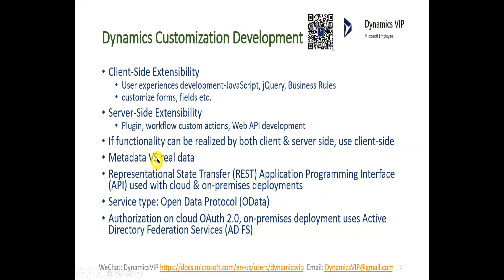For metadata and real data: metadata is used to define the real data. For example, the real data is a customer's name like John Smith — that's the first name and last name, which is real data. But metadata defines that first name and last name are string data types. So if we put numbers in the first name or last name field, that is not acceptable.